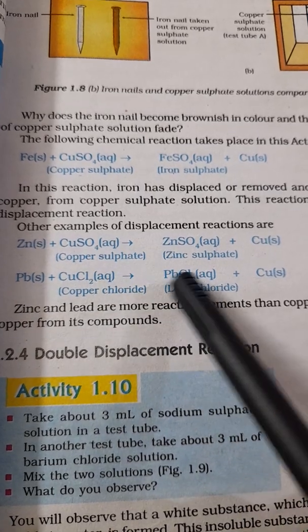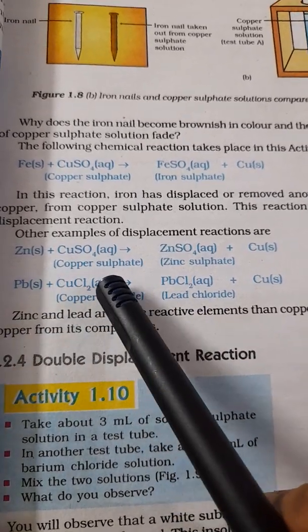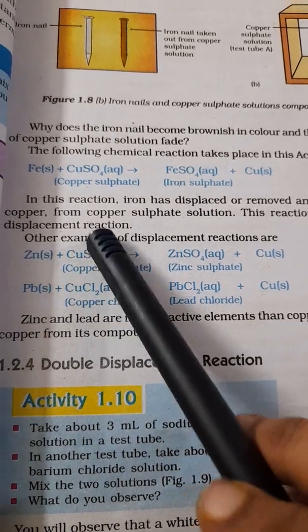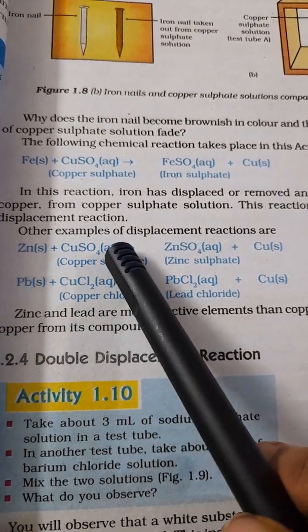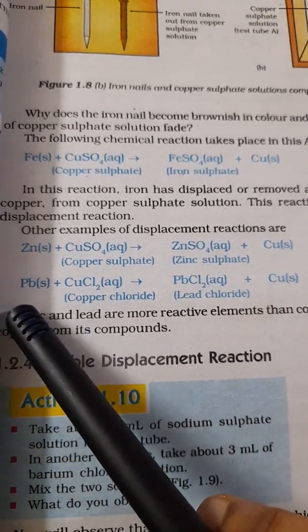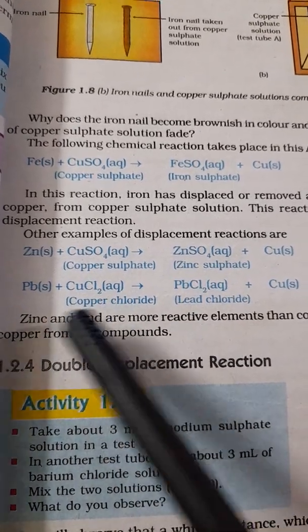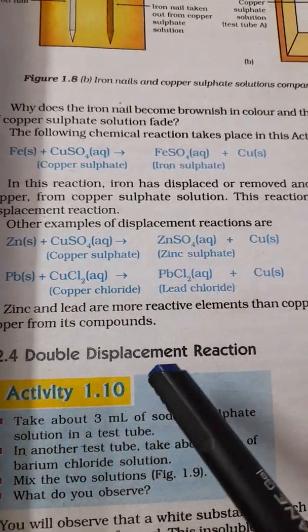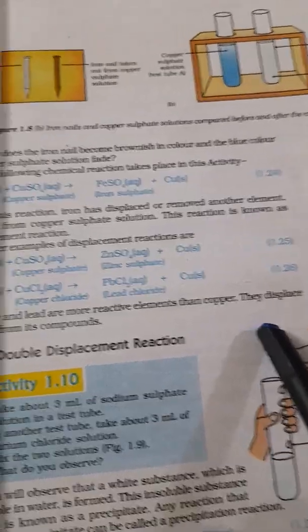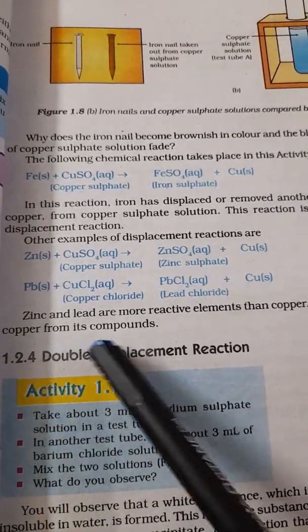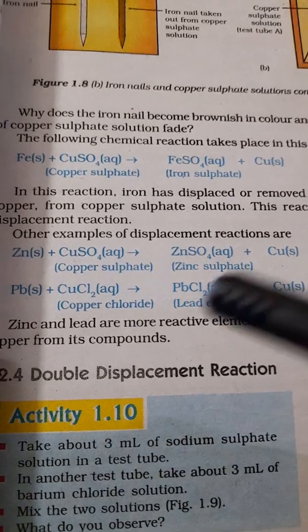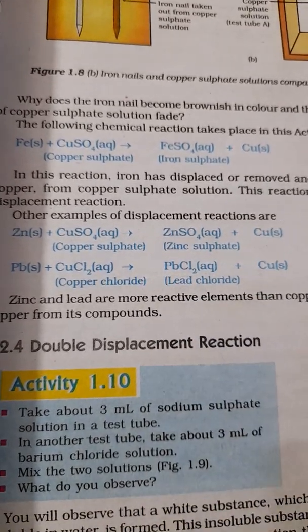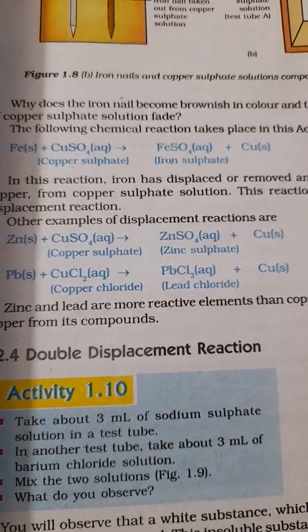Displaced means it removed copper from copper sulphate and this reaction is what we call a displacement reaction. Other examples of displacement reaction: zinc plus copper sulphate gives zinc sulphate plus copper. Here copper is moved out of copper sulphate and zinc combines with sulphate and forms zinc sulphate. Then lead plus copper chloride will give lead chloride plus copper. Zinc and lead are more reactive elements than copper, that is why they displace copper from its compound because the less reactive element will be replaced by the more reactive elements in such reactions. That is what we call displacement reaction.